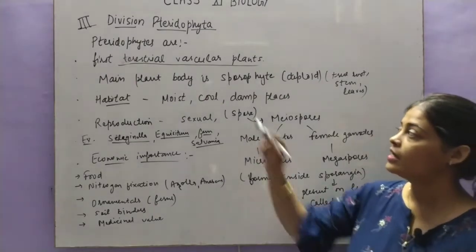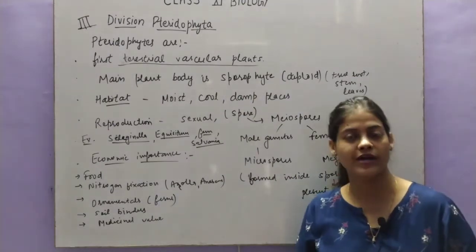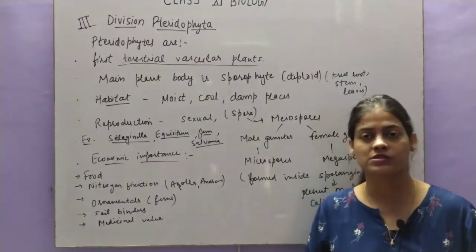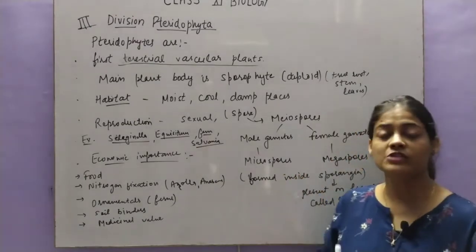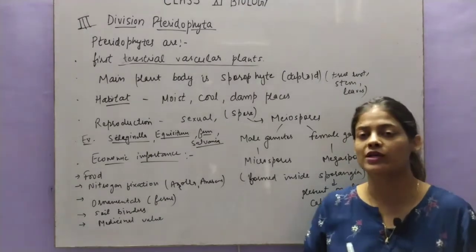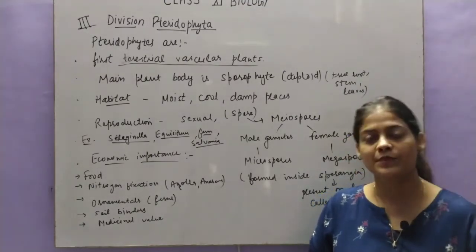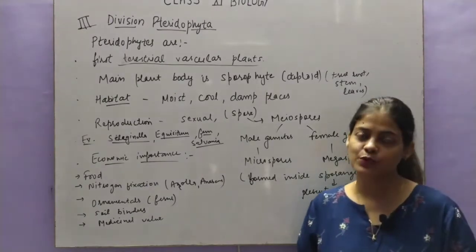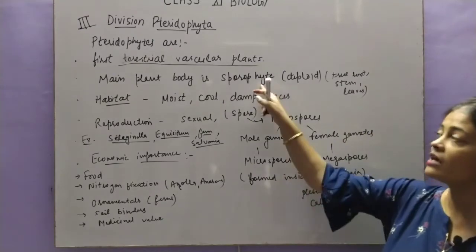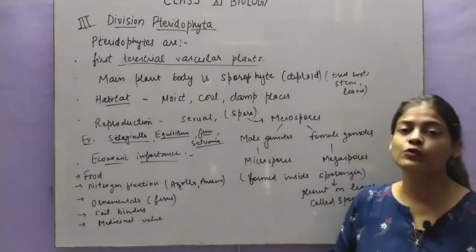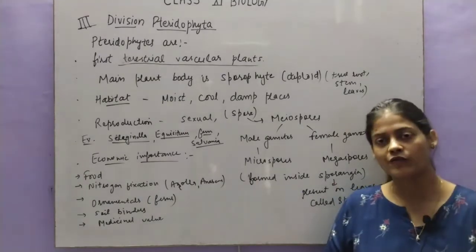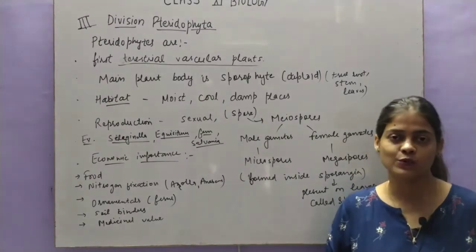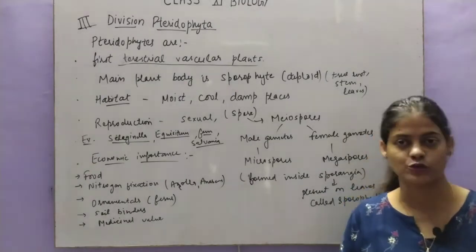The main plant body is a sporophyte. In thallophytes and bryophytes, the main plant body was a gametophyte, which had a thallus-like structure with no proper roots, shoots, or leaves. But pteridophytes are the first plants which have a sporophytic body — proper plant shape is present. Sporophyte means they are diploid in nature, as I told you gametophyte is haploid and sporophyte is diploid. They have true roots, stems, and leaves. In bryophytes, roots were not properly developed — they were in the form of rhizoids — but here roots are properly developed.